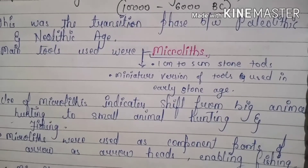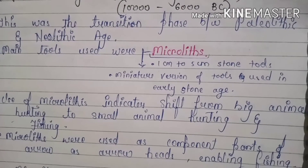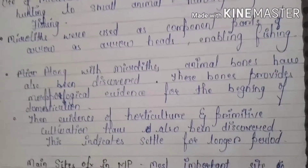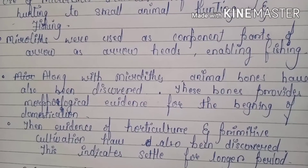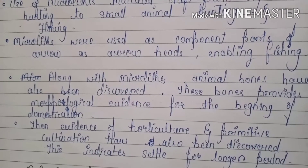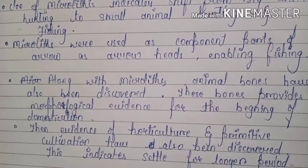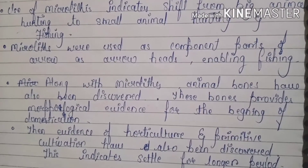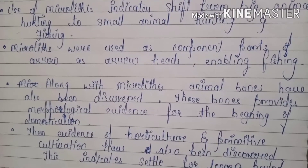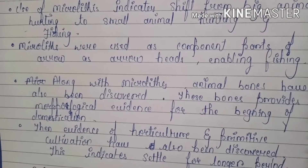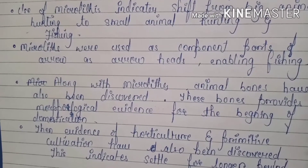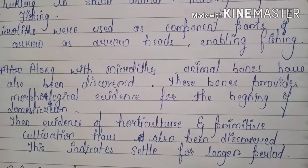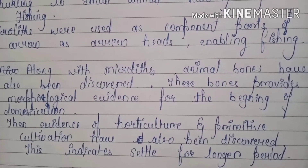Use of Microliths indicates a shift from big animal hunting to small animal hunting and fishing. Microliths were used as component parts of arrows as arrowheads, enabling fishing. Along with Microliths, animal bones have also been discovered, providing morphological evidence for the beginning of domestication.